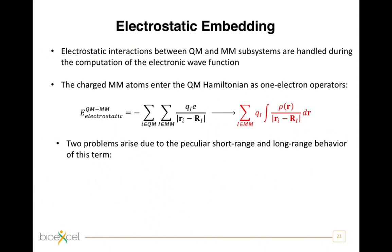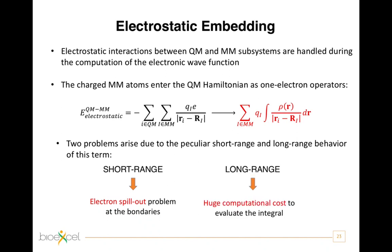By construction, the QM/MM electrostatic energy term that in the electrostatic embedding one should add to the quantum Hamiltonian is the red expression in this slide. This means that the electrons defining the charge density rho see the MM atoms — the classical atoms — as special nuclei with non-integer and possibly even negative charges Q_i. This expression immediately gives rise to problems originating from the peculiar short-range and long-range behavior of this term: the so-called electron spill-out, and the very large computational cost required to evaluate this term.